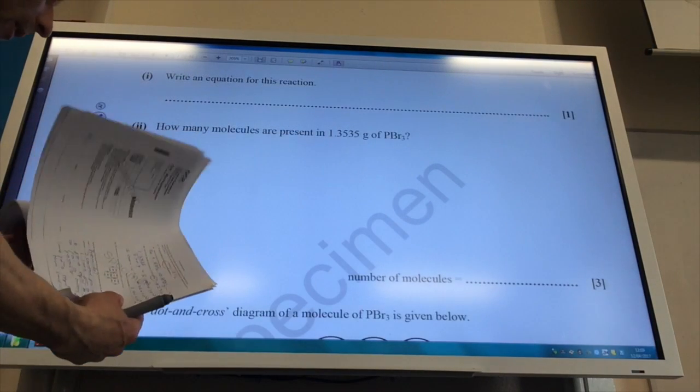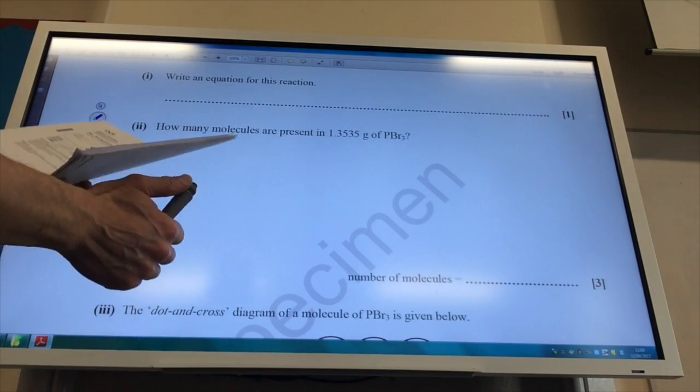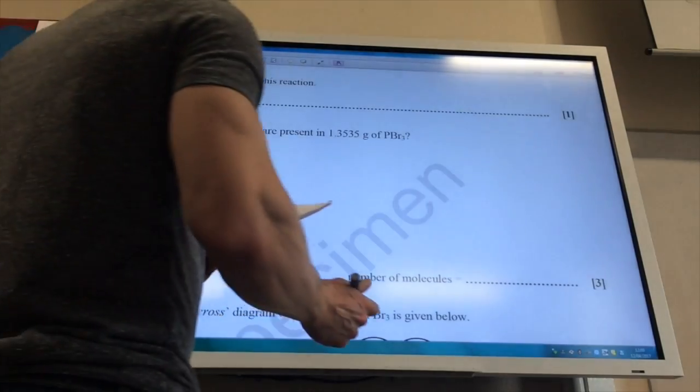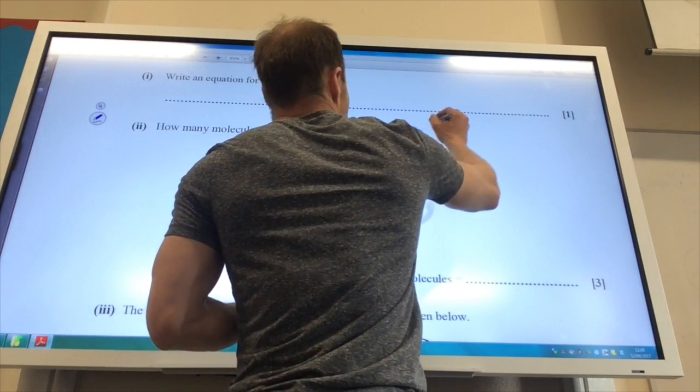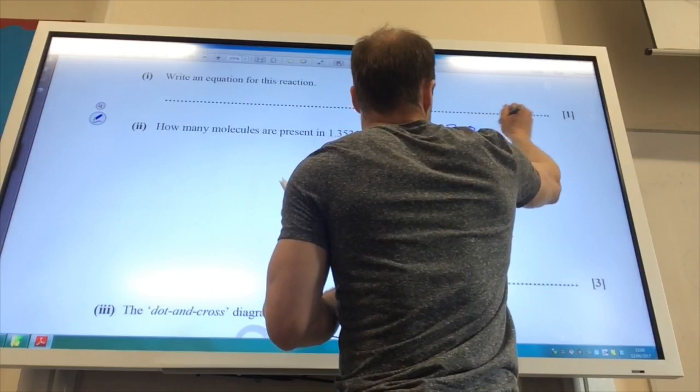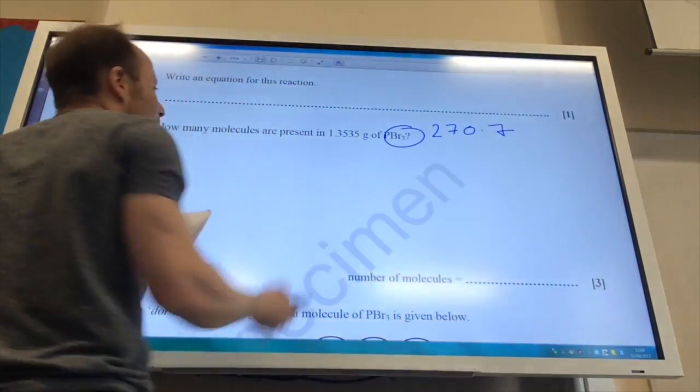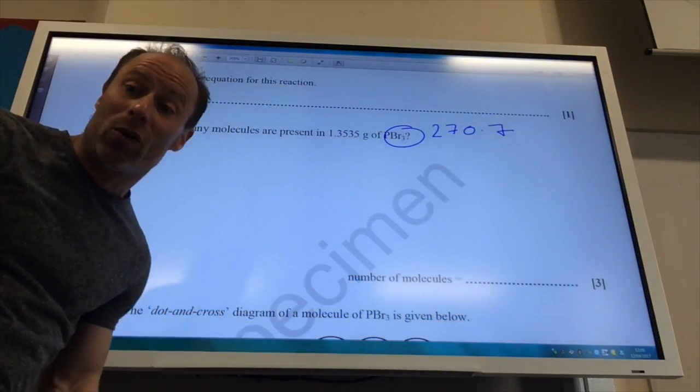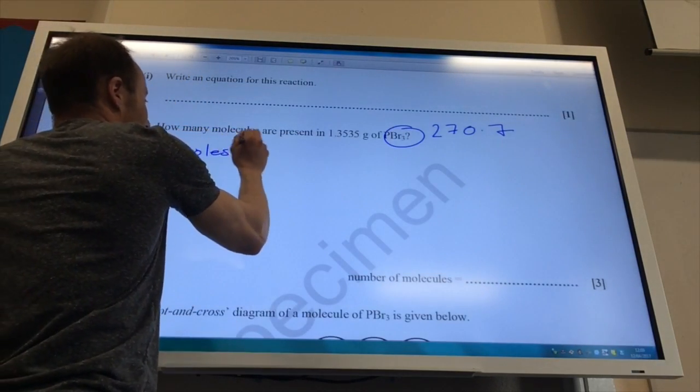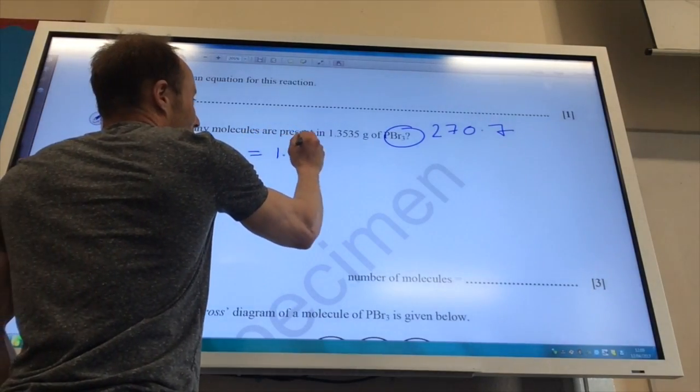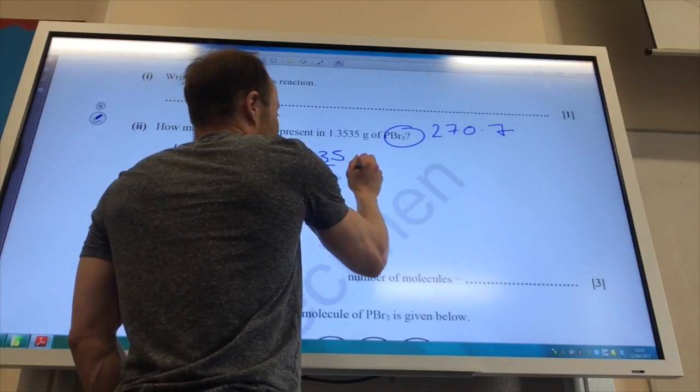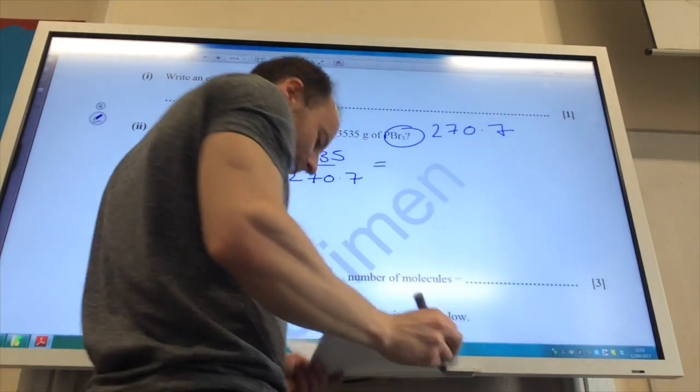Right, so how many molecules are there in 1.35 grams of phosphorus tribromide? Okay, so the relative molecular mass of phosphorus tribromide is 270.7. So to find the number of molecules, I need to first of all find the number of moles, and then times it by Avogadro's number.